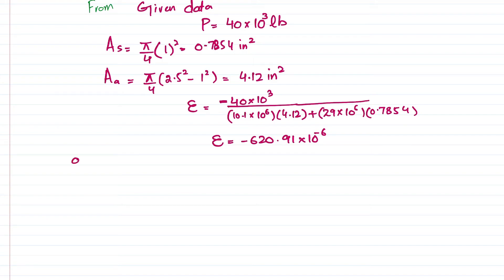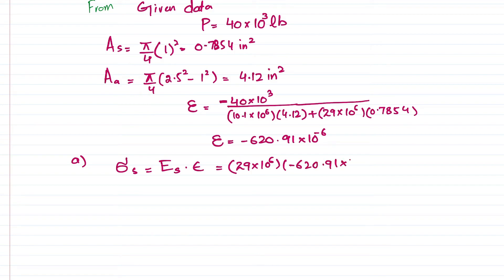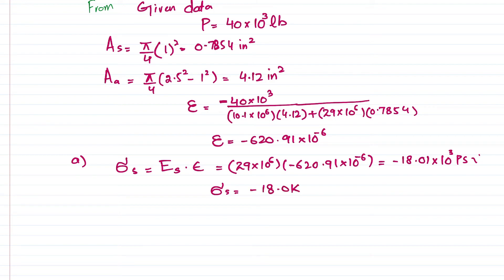Moving to Part A - stress in the steel core. Stress equals modulus of elasticity times strain: σ_steel = Es × ε = (29×10⁶) × (−620.91×10⁻⁶) = −18.01×10³ psi. Therefore, the stress in the steel core is −18.01 ksi (compressive).